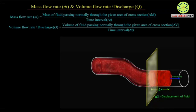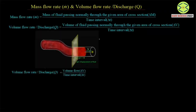Delta x is the displacement of fluid in the given time interval delta t, and v is the velocity of fluid. In the given time interval delta t, fluid undergoes a displacement delta x. So we can find out the volume of fluid which has passed through the area of cross section, which is nothing but the area of cross section multiplied by the displacement of fluid, that is delta x. By definition of volume flow rate or discharge, the volume flow rate is the ratio of volume flowing across the area to the time interval.